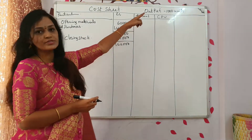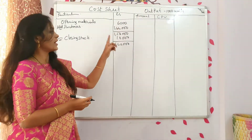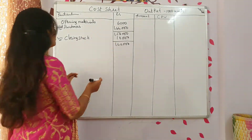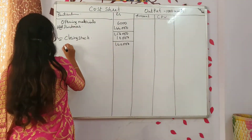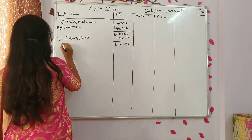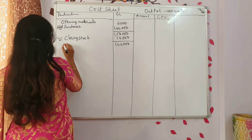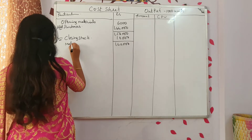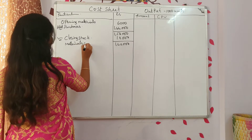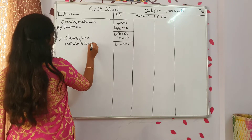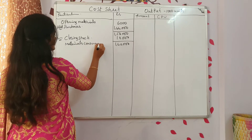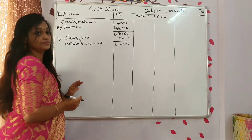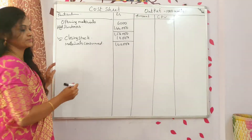To manufacture 1000 units, they have utilized a total of 1,40,000 rupees. This is what materials consumed. Next, is there any wages?